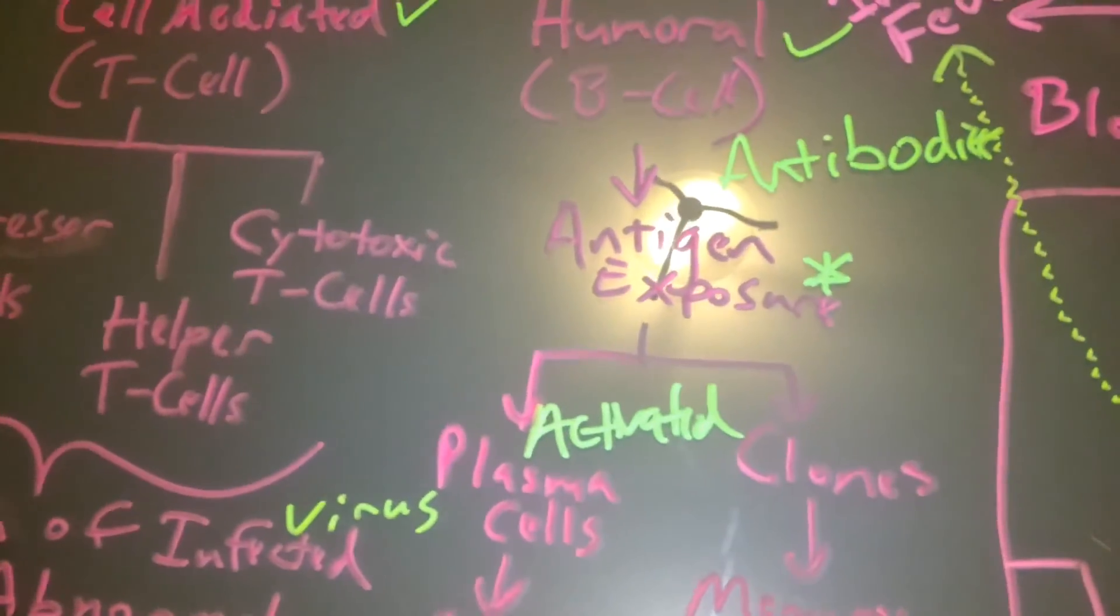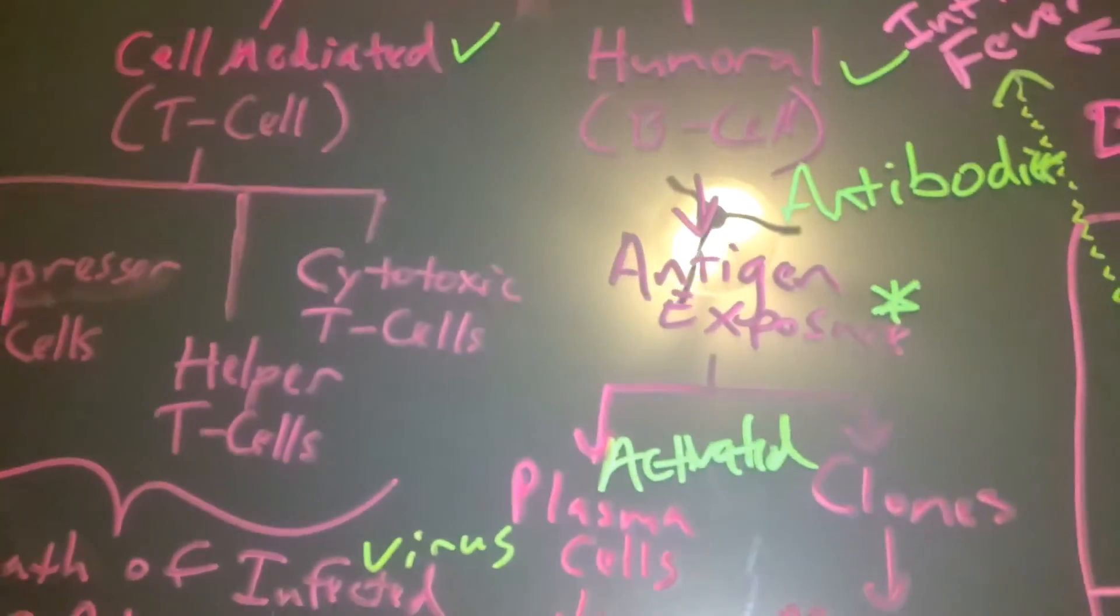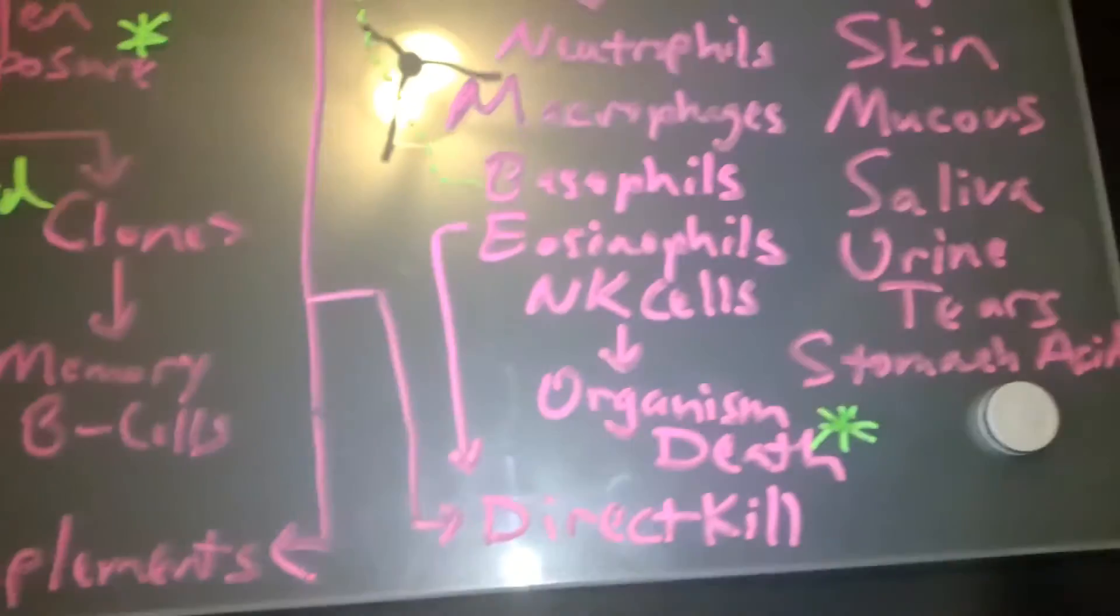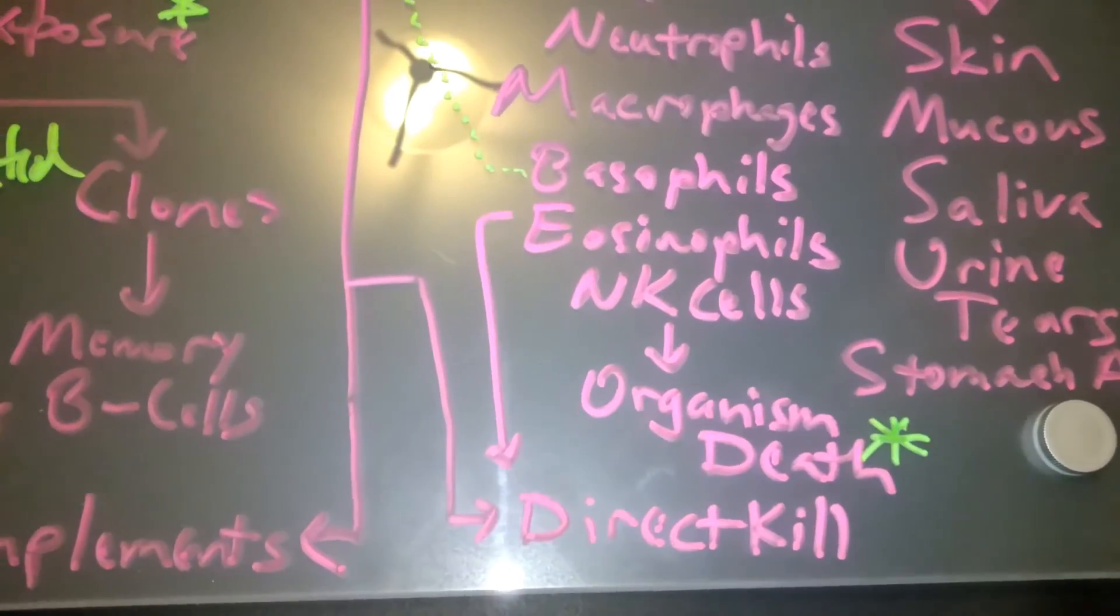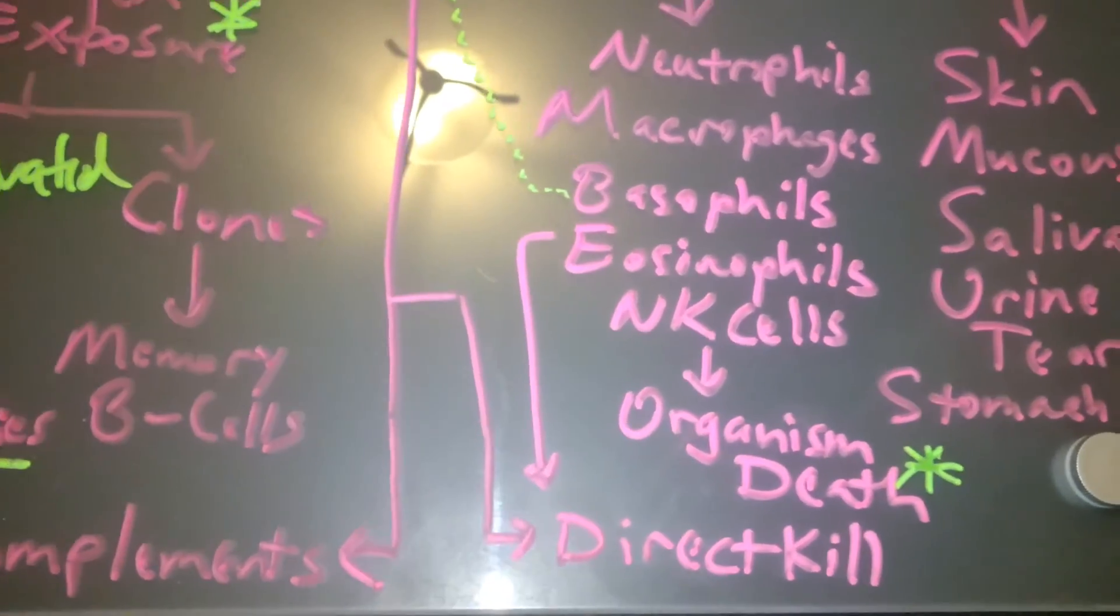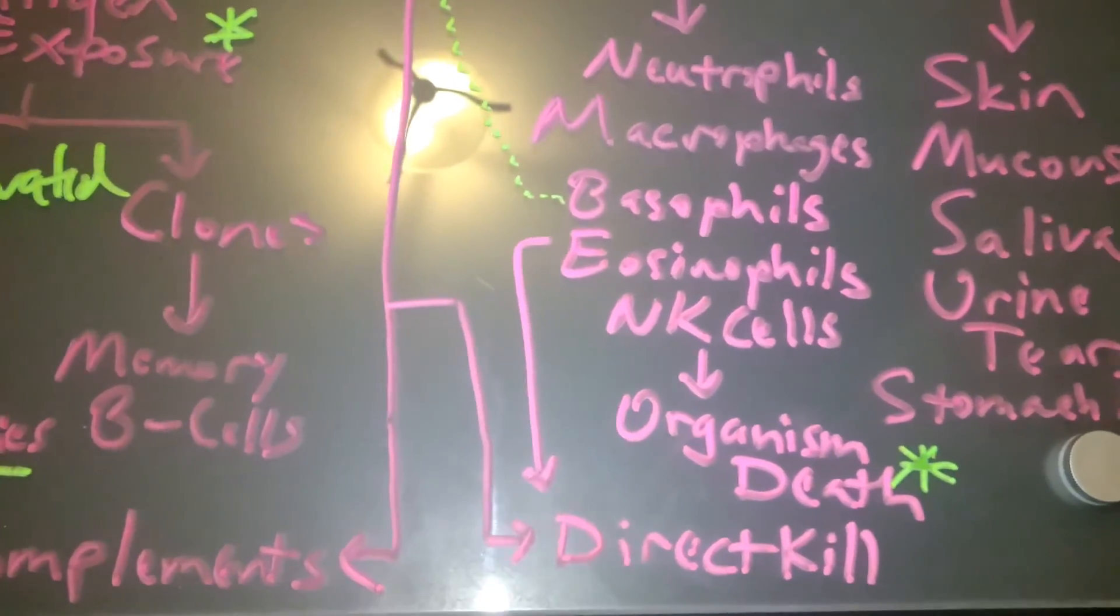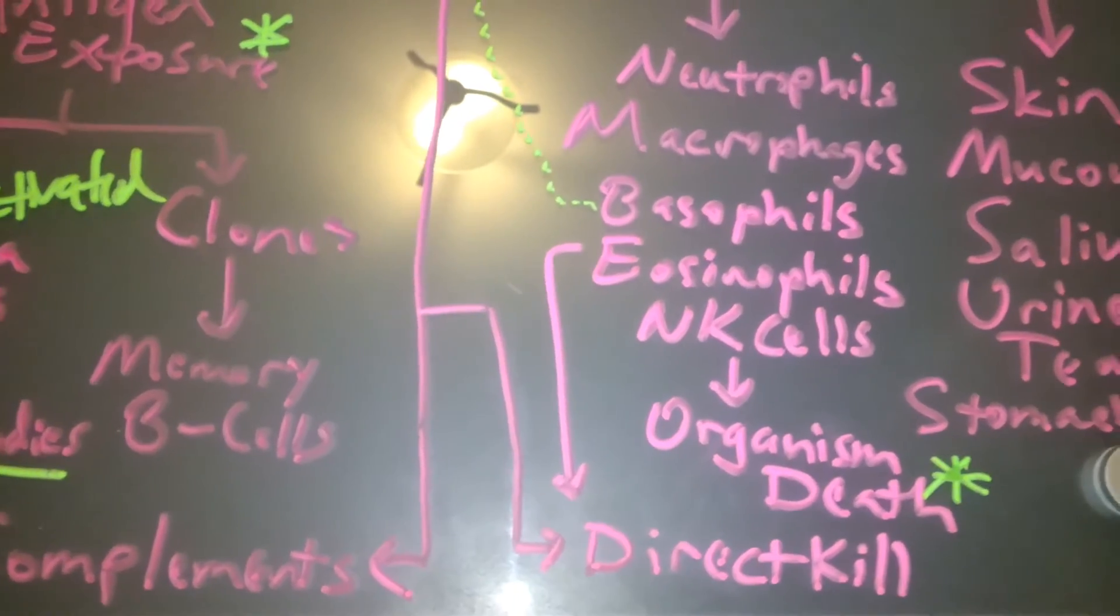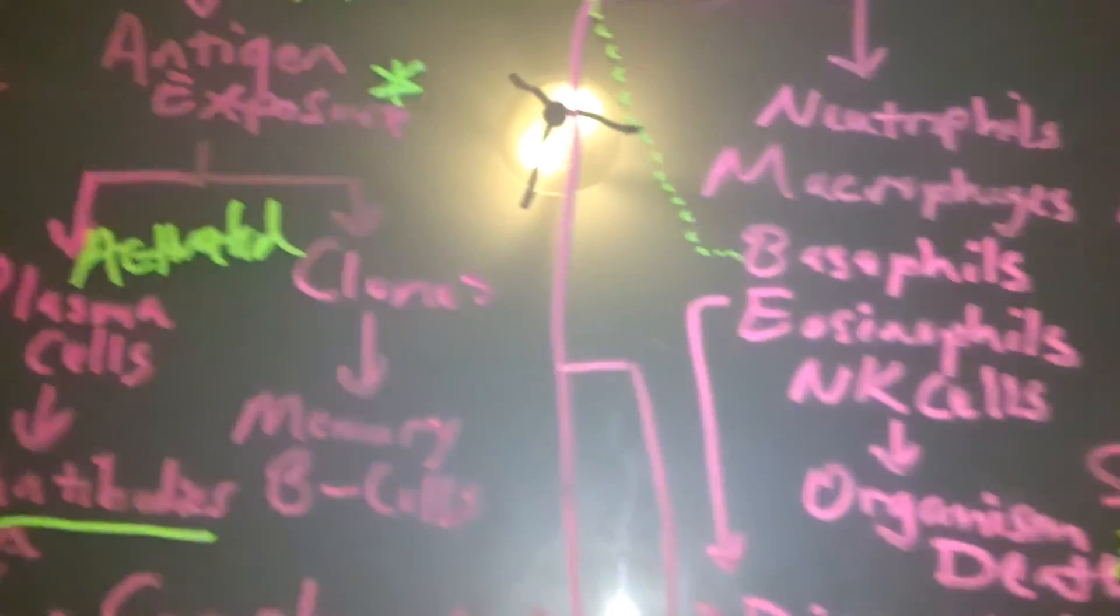Versus these guys over here with T cells and B cells, they deal with something called a direct kill. So not only are they destroying those cells, but they're also establishing a memory of what you encountered so that they can erect a stronger, better, more efficient, and faster defense.